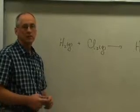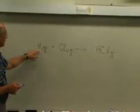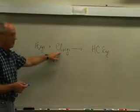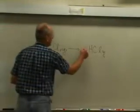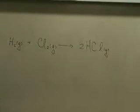To write the balanced reaction equation for the reaction between hydrogen and chlorine, we see that we have two hydrogen atoms on the left side and two chlorine atoms on the left side, and therefore we will need to have two HCl molecules on the product side.